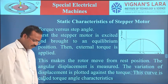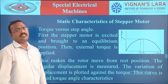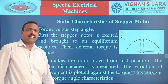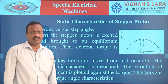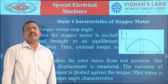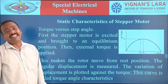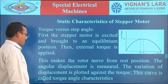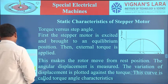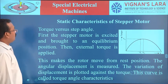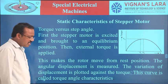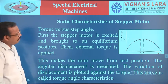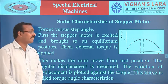The next characteristic is static characteristics, and another one is dynamic characteristics. The dynamic characteristics occur during motor operation — during running operation — and are also called running characteristics. For static characteristics, we look at torque versus step angle. The stepper motor is excited and brought to an equilibrium position, then an external torque is applied.